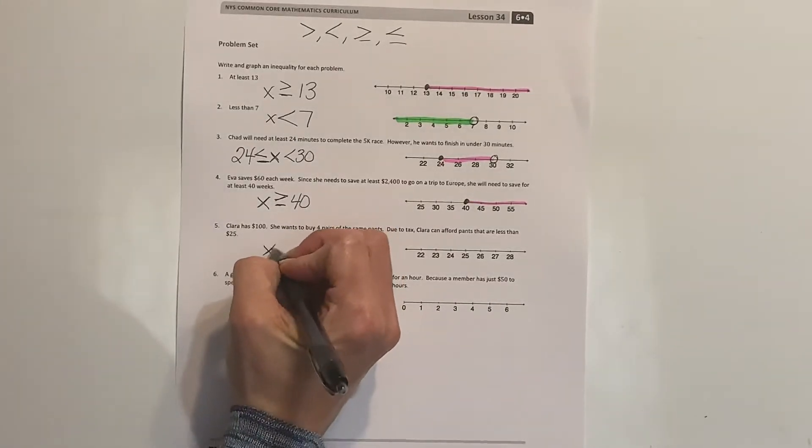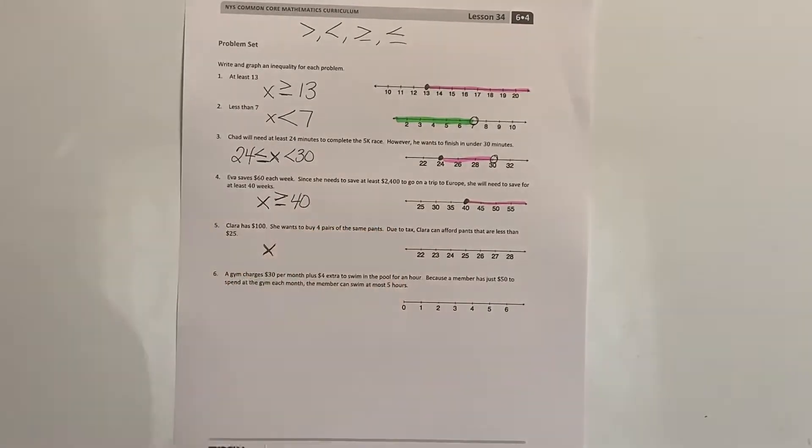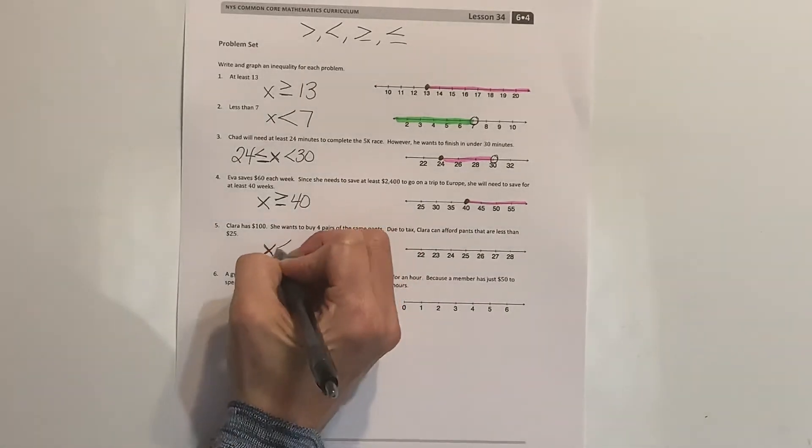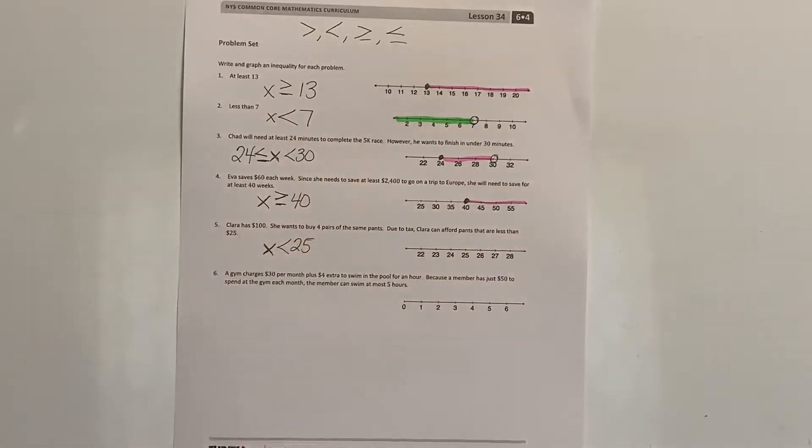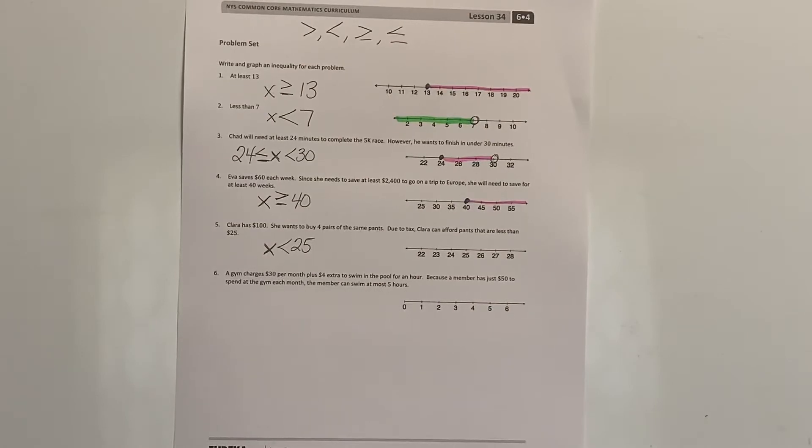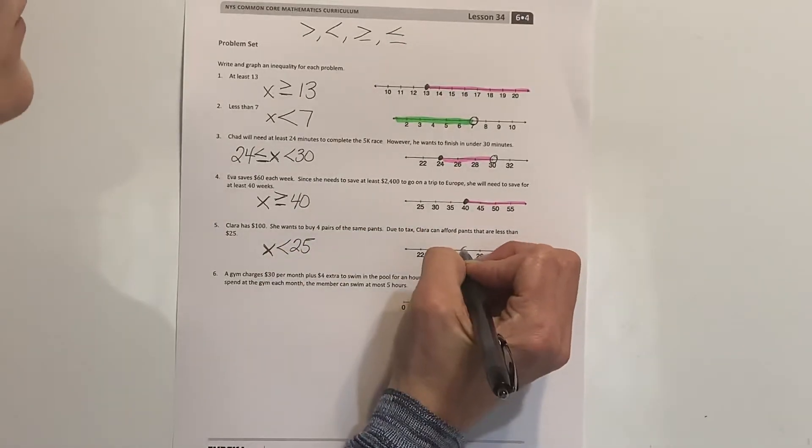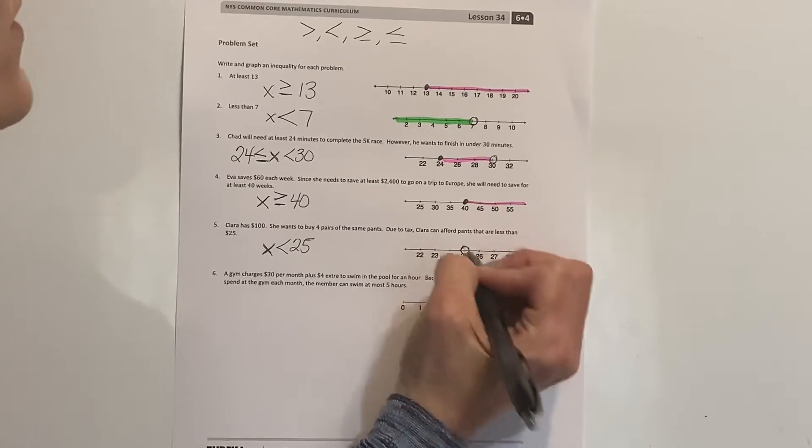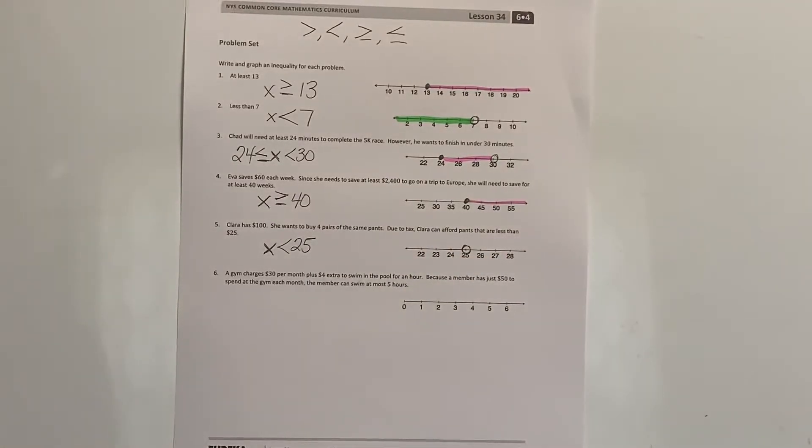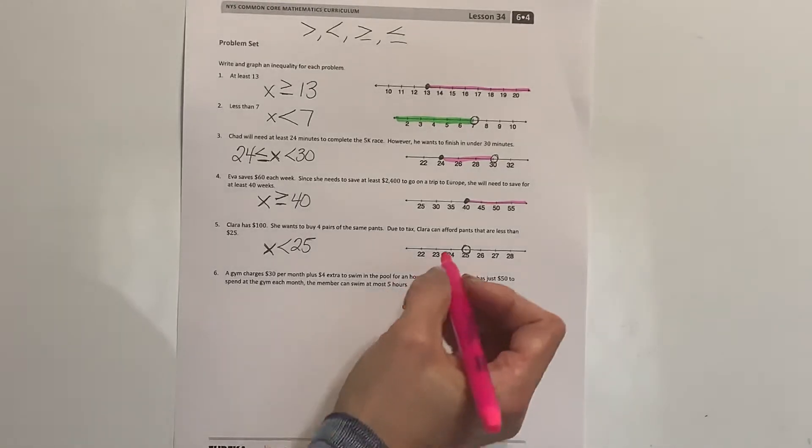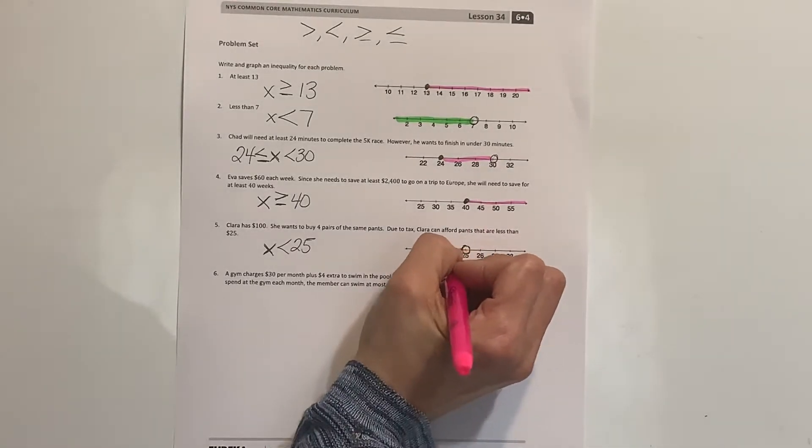So the pants that she buys, if she wants to buy four pairs of them, they have to be under $25. The pants have to be less than $25. I know that when she purchases them, if they're going to be under the $25, or she won't have enough money to pay for the tax, it will not include the $25, so that's going to be an open circle. But it is going to be less than $25, so I know which way my line has to go.